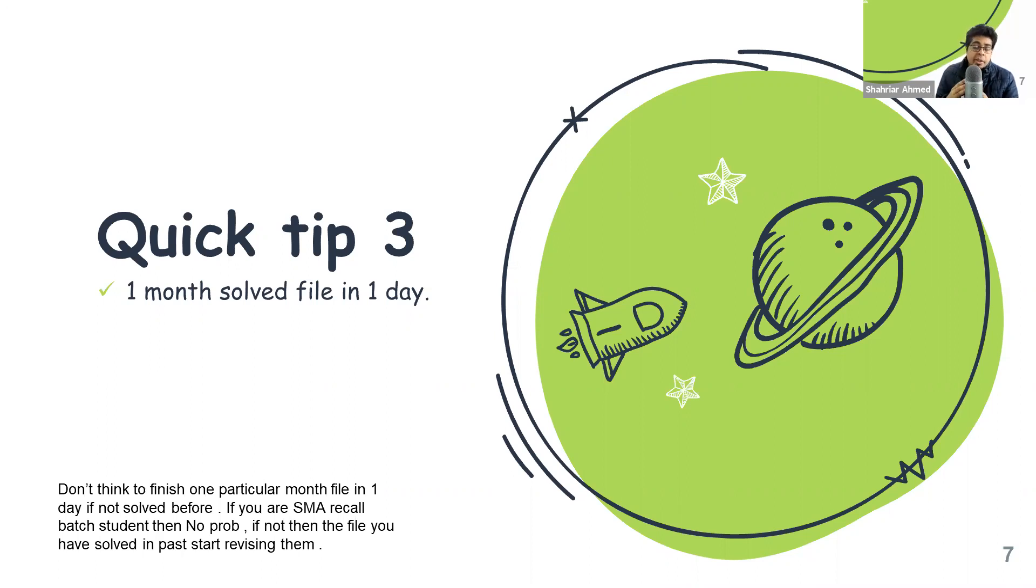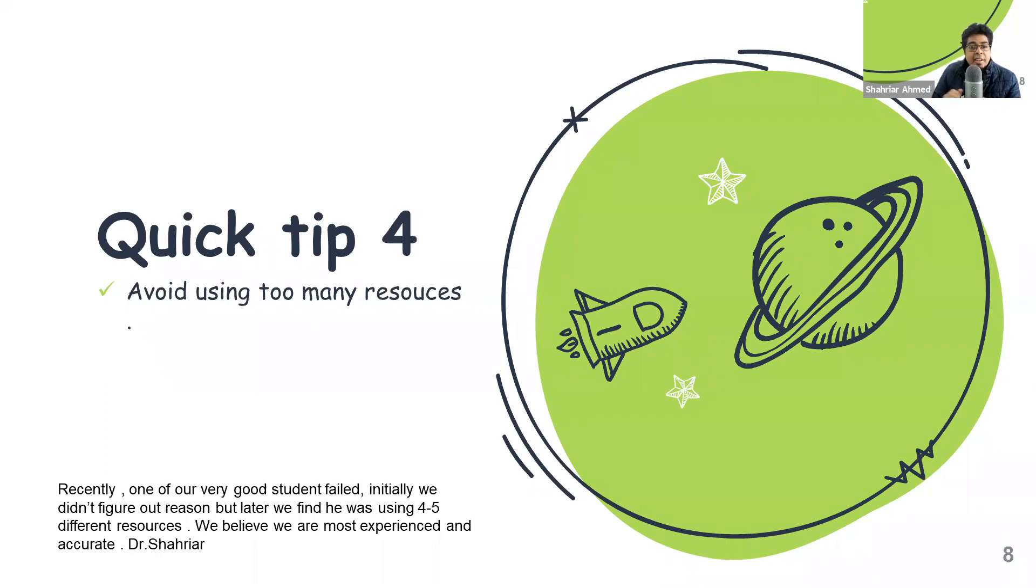That is tip number three: one month solved file per one day in the last 10 days. Don't think to finish one particular month file in one day if you haven't solved it before. Already solved files, in the last 10 days, try to solve one file of a particular month. Sharir's Medical Academy can help you with that.